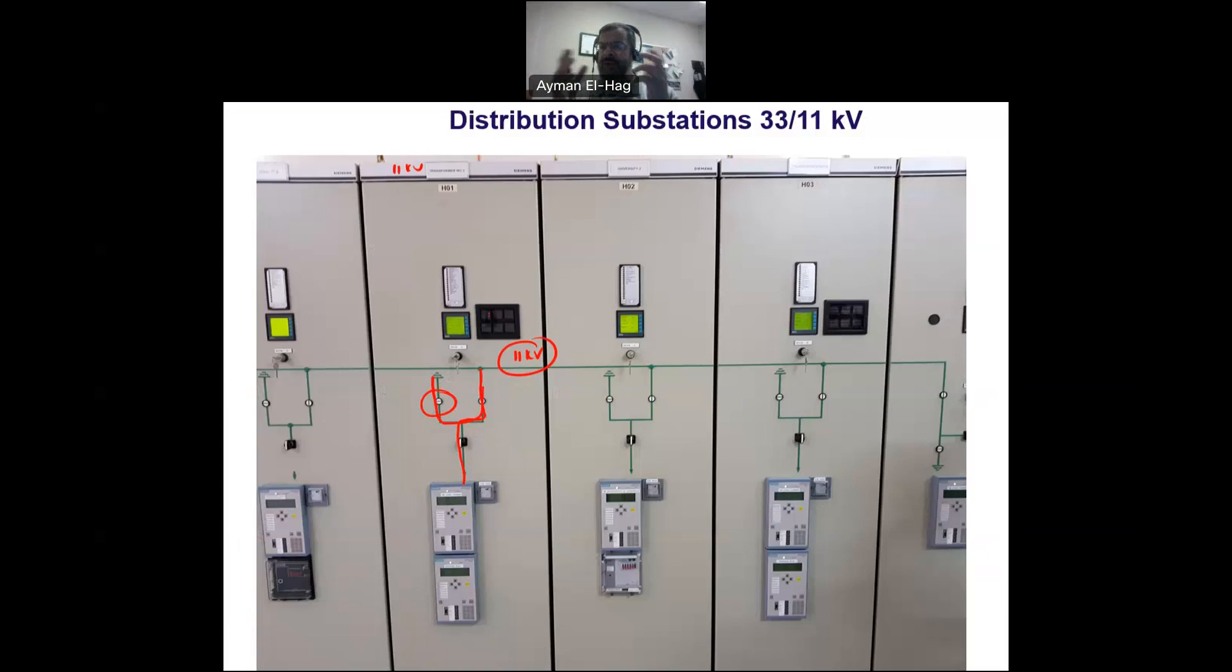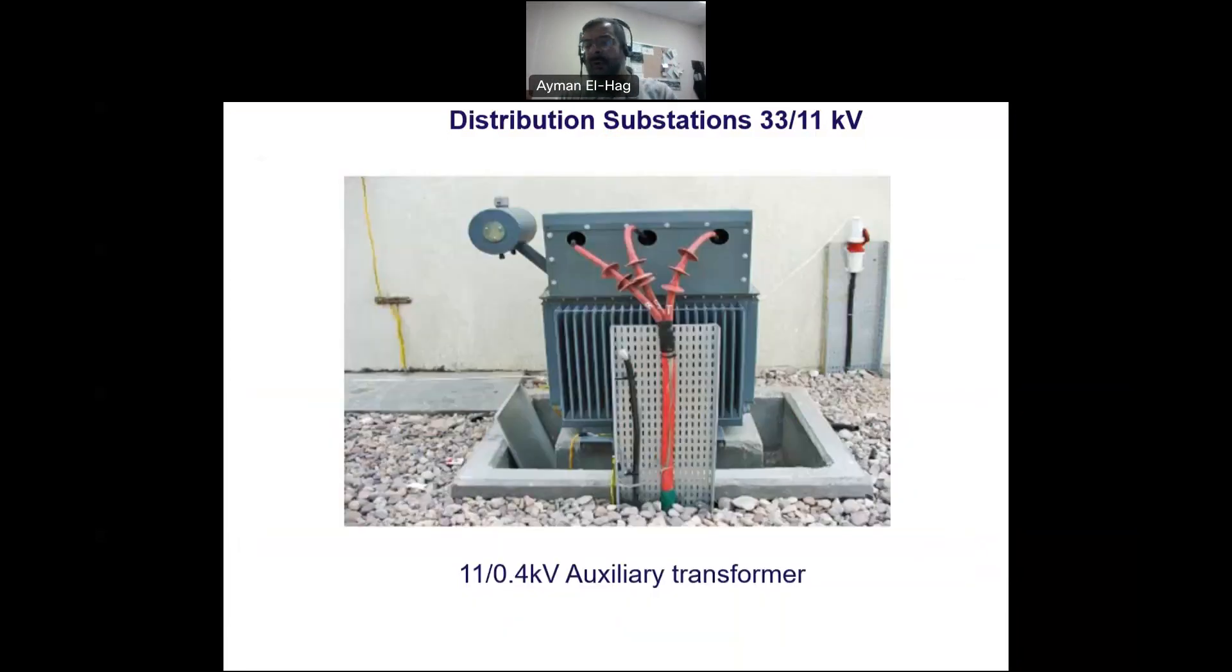This is the auxiliary transformer I told you about. The objective is to supply the local loads in the substation. You have some lighting, air conditioning, and different loads inside the substation, and you want to feed them, so we use this auxiliary transformer to do that.